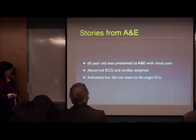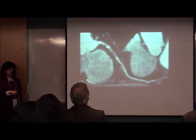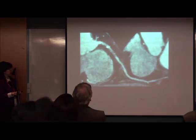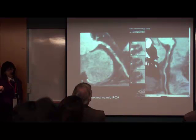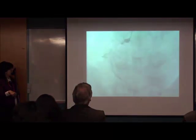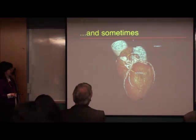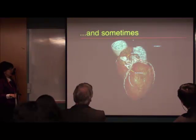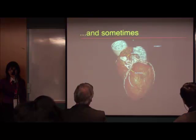A 60-year-old man presented with chest pain and had abnormal ECGs and cardiac enzymes. He was admitted to the cardiac department but was scared to undergo angiography first, so they did a CT scan. CT showed an occlusion of the proximal to mid right coronary artery — a chronic total occlusion — which was subsequently confirmed on conventional cath angiogram. We also occasionally get unusual findings, like this patient who went to A&E with chest pain and was found to have a fistula between the pulmonary artery and the LAD, with a small aneurysmal dilatation, probably causing some degree of steal and causing the symptoms.